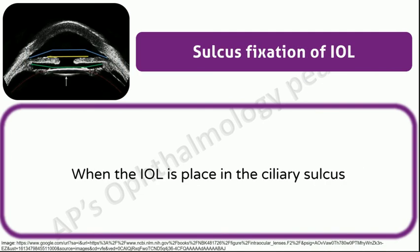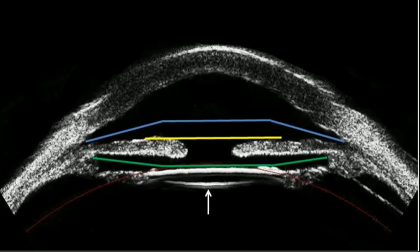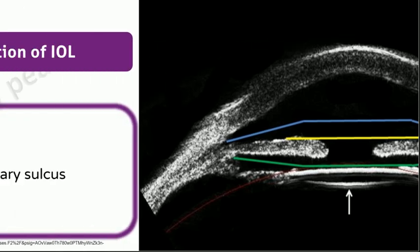Sulcus fixation of IOL: when the IOL is placed in the ciliary sulcus. This is done most commonly when there is a posterior capsule rent, thus preventing in-the-bag fixation. A figure shows the IOL placed in the bag (indicated by an arrow), with the blue line representing the position of an anterior chamber IOL, the yellow representing an anterior iris claw lens position, and the green representing fixation in the ciliary sulcus.